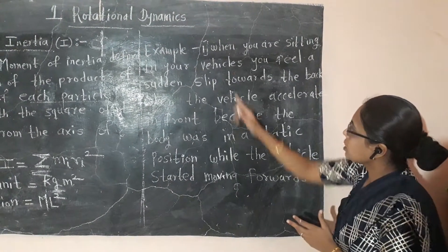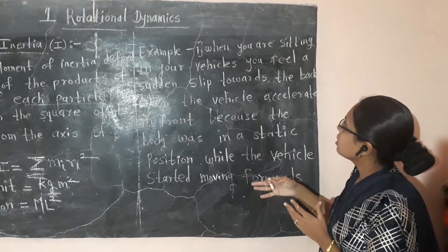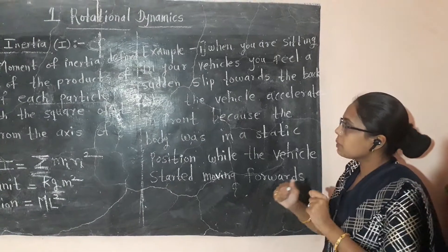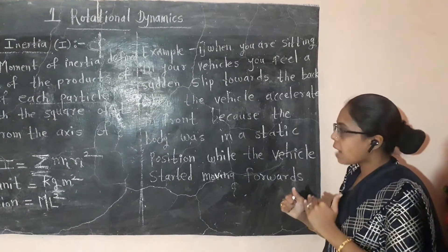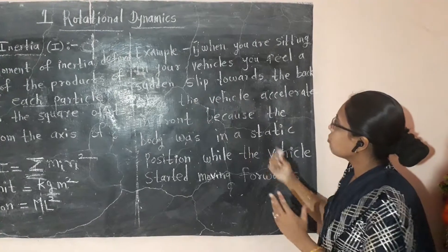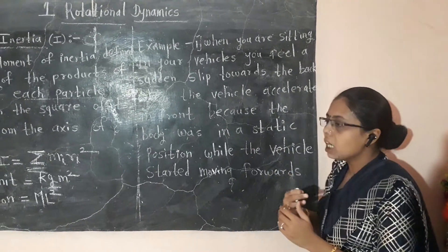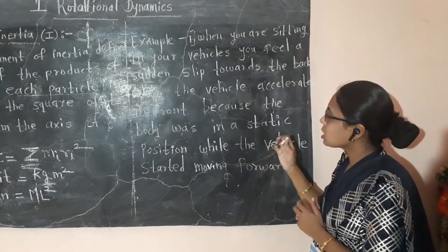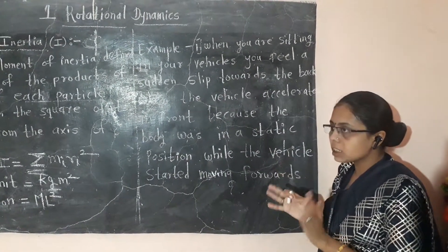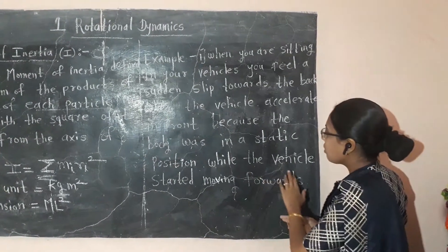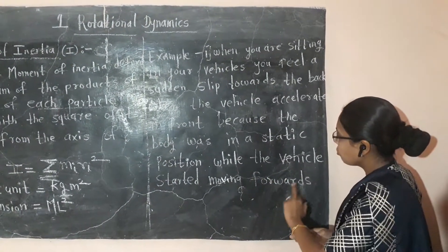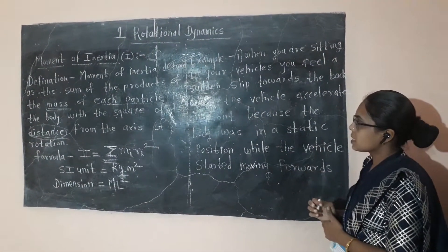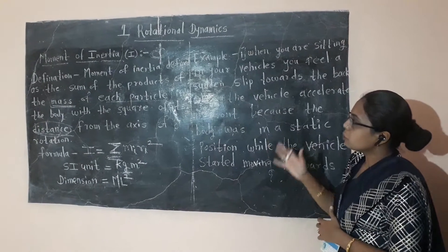When you are sitting in a vehicle and it suddenly accelerates, your body tends to stay in its original static position and you are pushed towards the back. When the vehicle accelerates forward, the body resists the change in motion — remaining static while the vehicle moves. This is an example of moment of inertia.